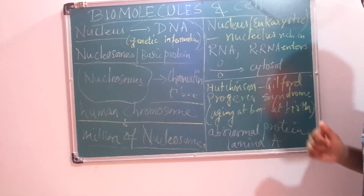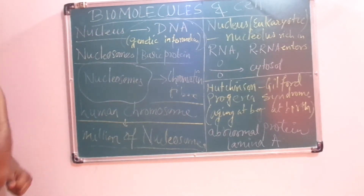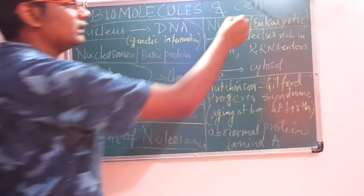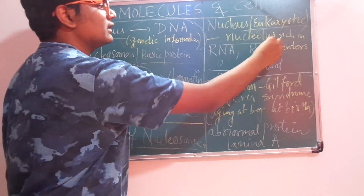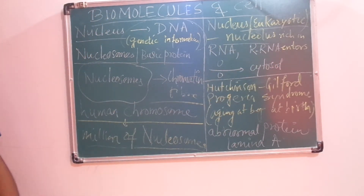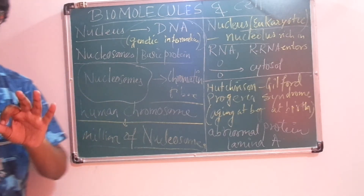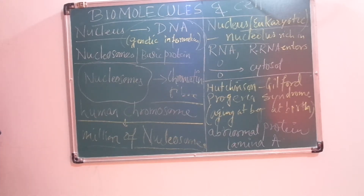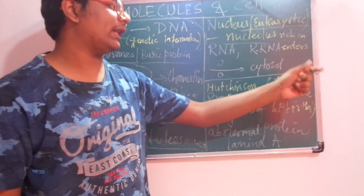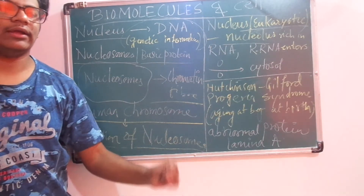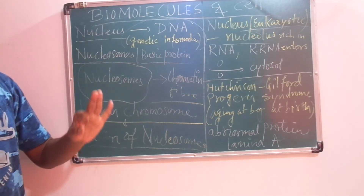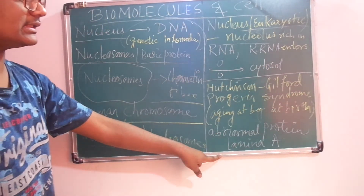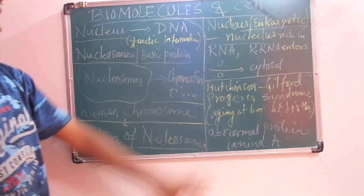The eukaryotic nucleus contains the nucleolus, which is rich in RNA and especially ribosomal RNA. This ribosomal RNA enters the cytosol through the nuclear pores.